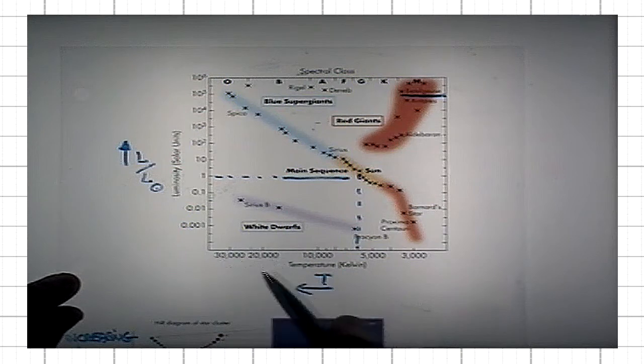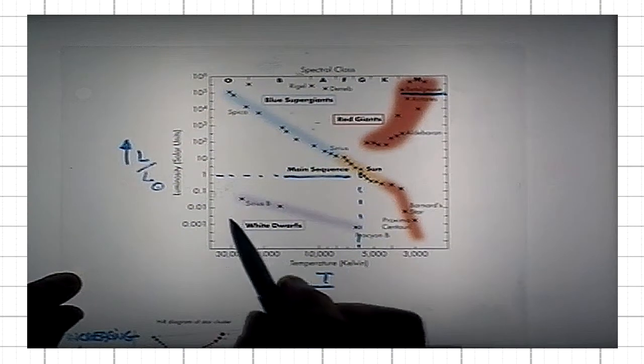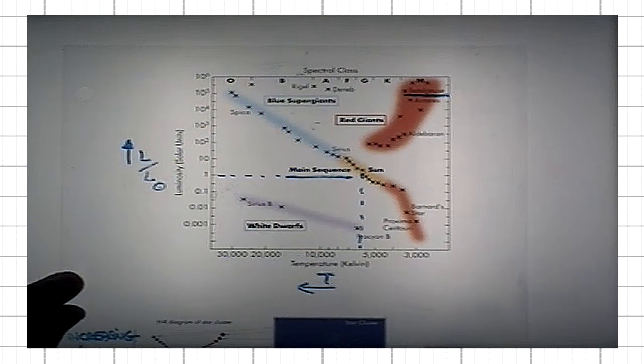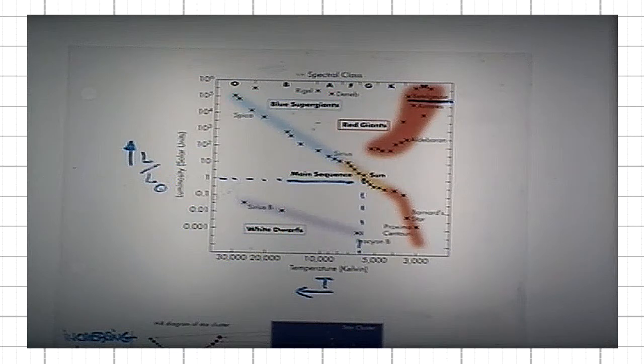In spite of the fact that they are very hot, and the luminosity scales with the fourth power of the temperature, they are dim, they have low luminosity, precisely because their radii are tiny. A typical white dwarf, and that's how we call these stars, has a radius comparable to the radius of the Earth, which is about 110 times smaller in size than the Sun.